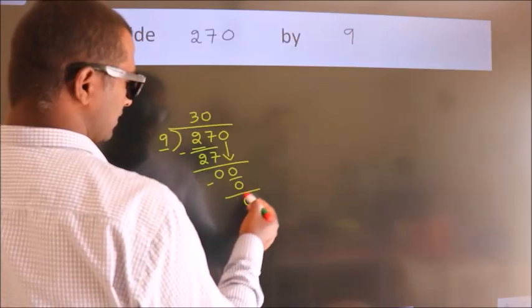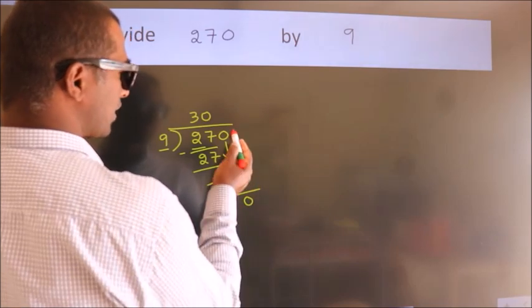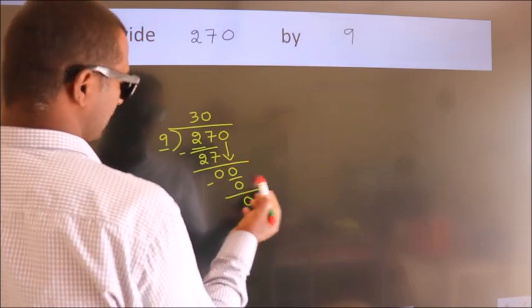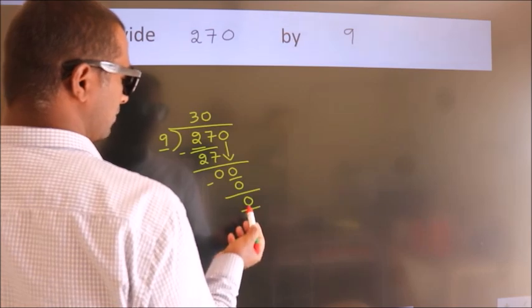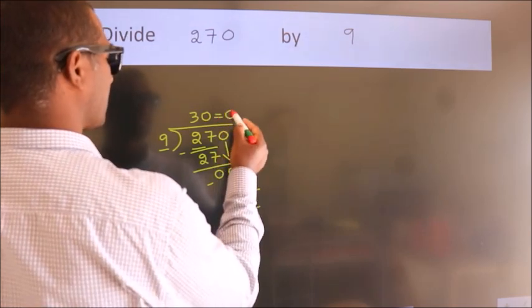After this, no more numbers to bring it down. And we got remainder 0. So this is our quotient, 30.